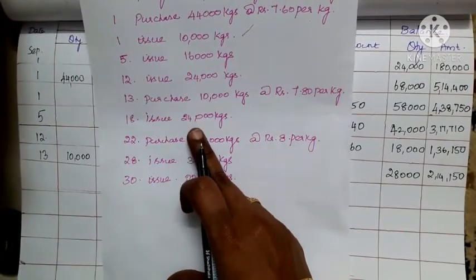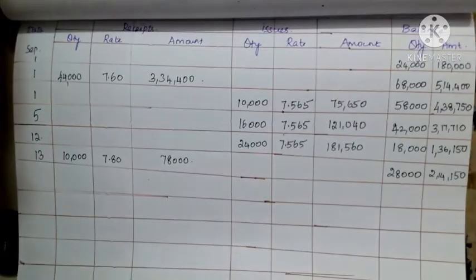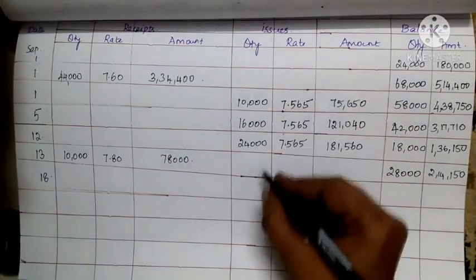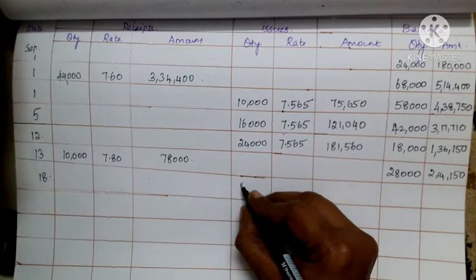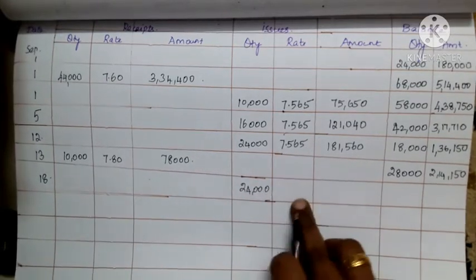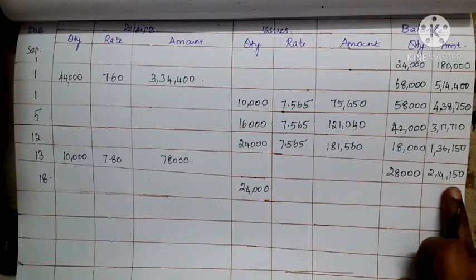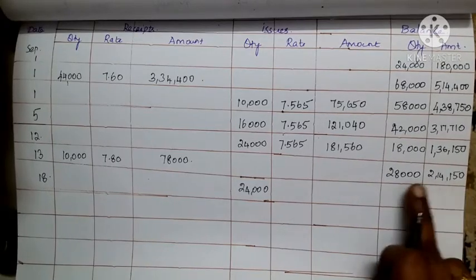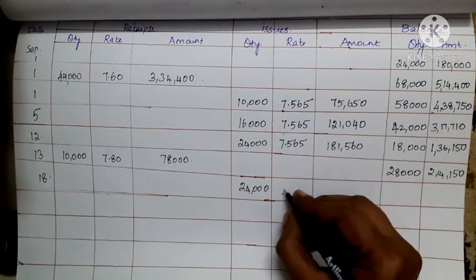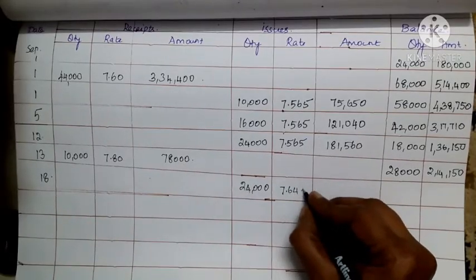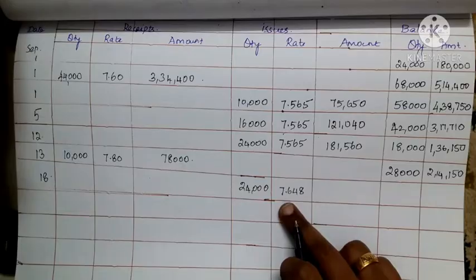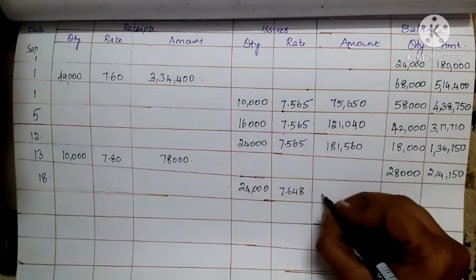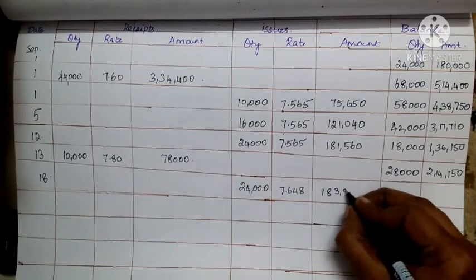Date 18: issue is 24,000 kg. Divide the balance amount 2,14,150 by the balance quantity 28,000 to get a rate of 7.648. Multiply 24,000 by 7.648 to get the issue amount of 1,83,552.